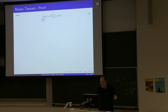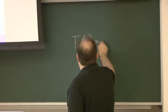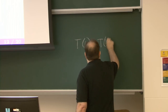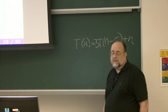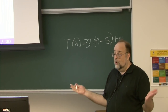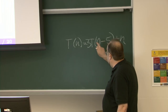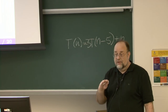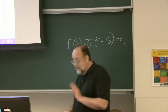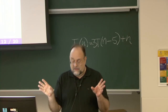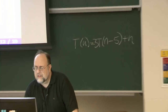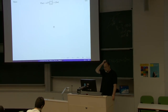For example: T(n) = 3·T(n − 5) + n. Can you apply Master Theorem? No — because in Master Theorem the argument must decrease by a fraction, not by a constant value. So just make sure you understand how to apply it correctly.